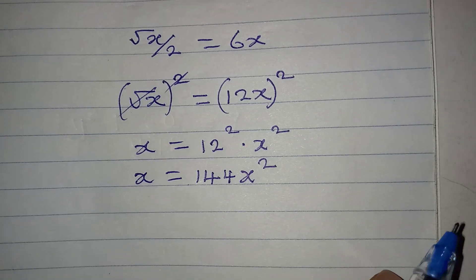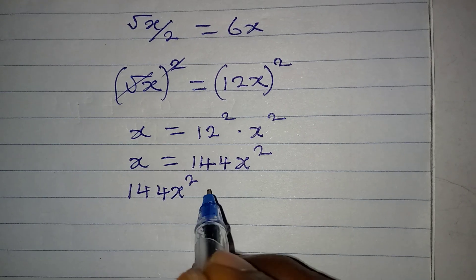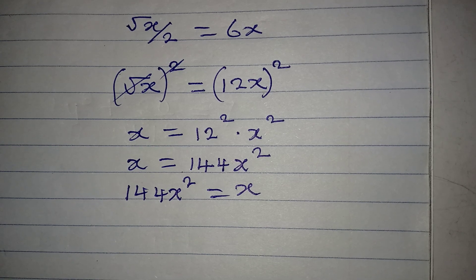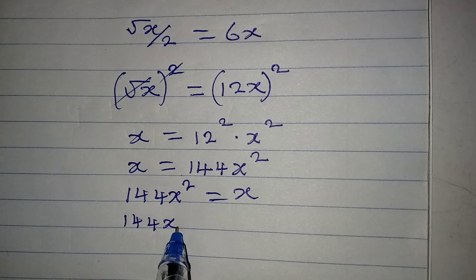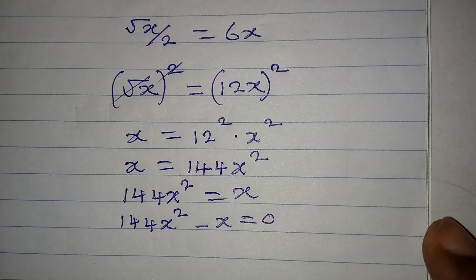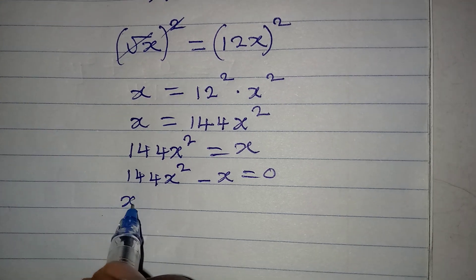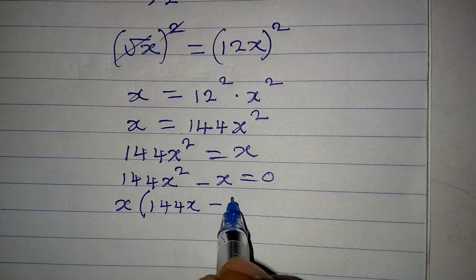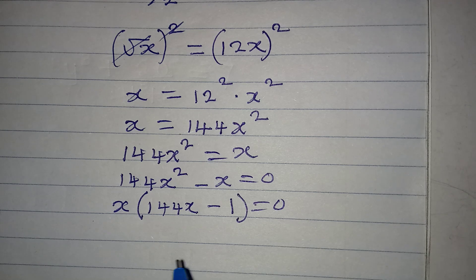Rearranging, we have 144x squared equal to x. Bringing everything to the left gives us 144x squared minus x equal to zero. We can factor out x, giving x times (144x minus 1) equals zero.